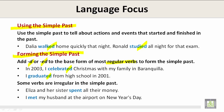Some verbs are irregular in the simple past, which means they do not have -d or -ed. For example: Elisa and her sister spent all their money. Or: I met my husband at the airport on New Year's Day.